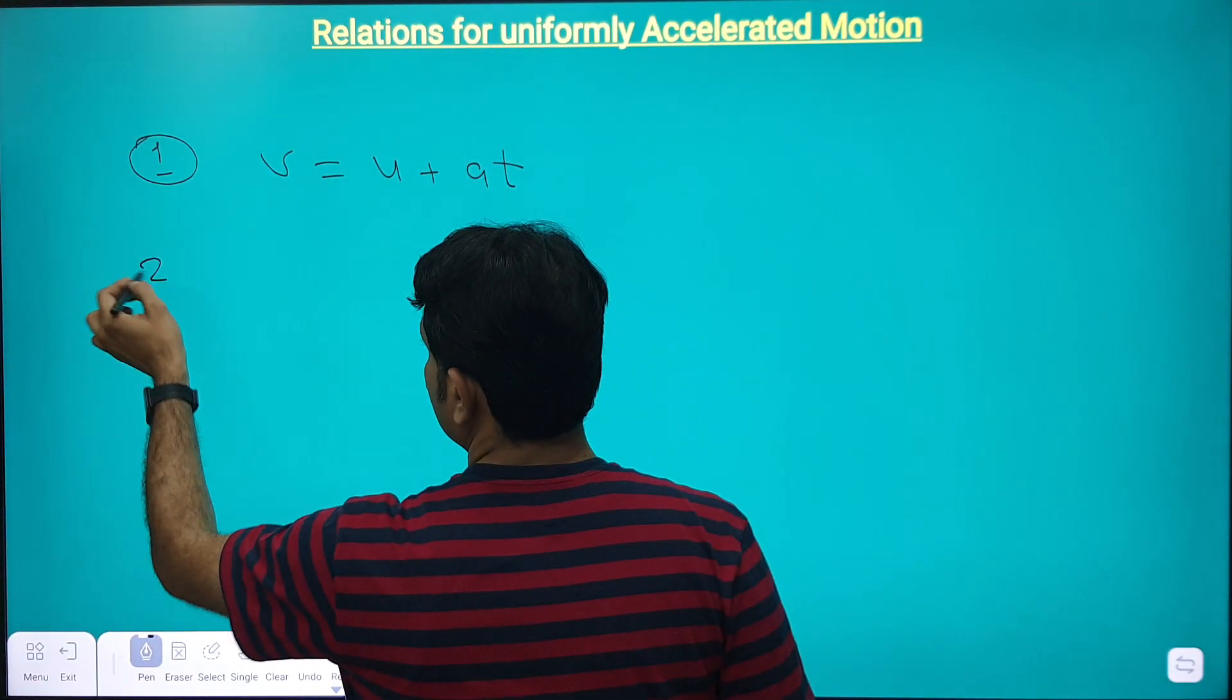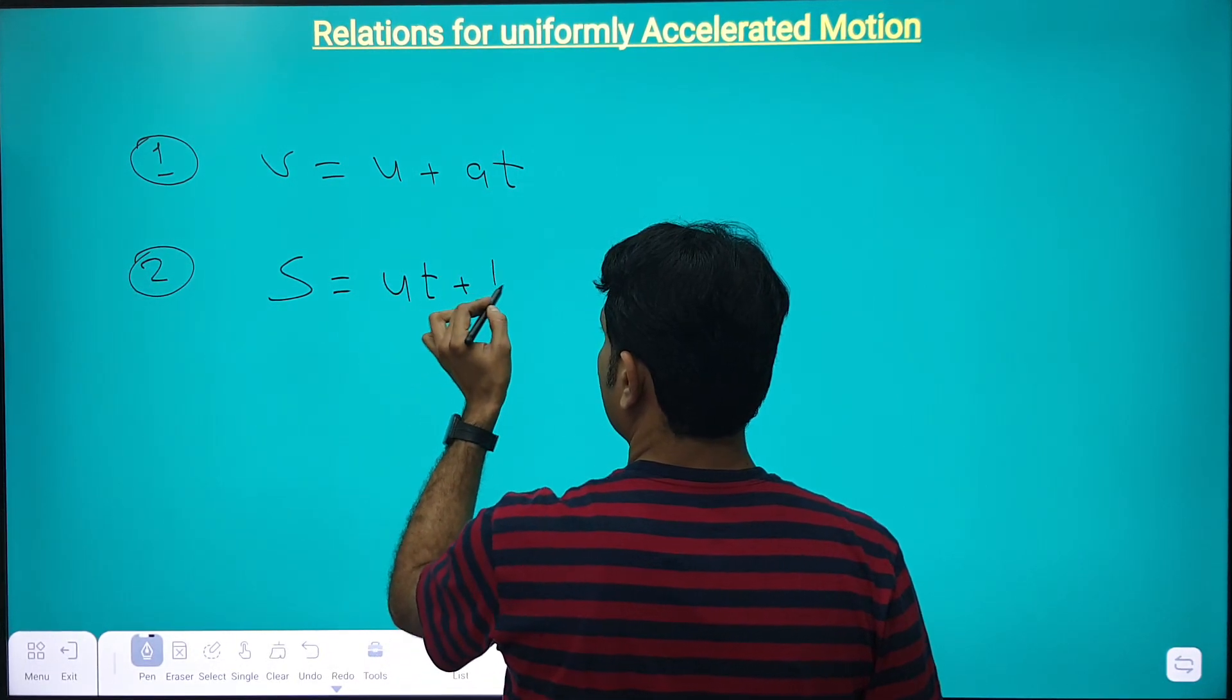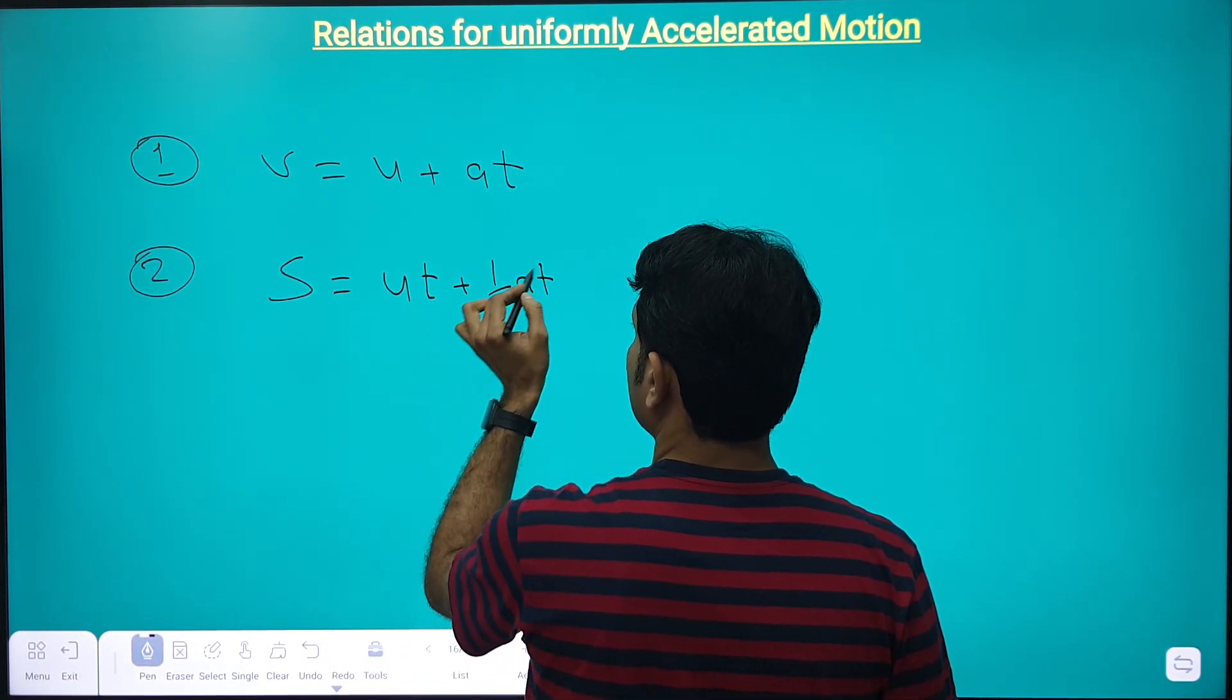The second relation is S is equal to U T plus half A T square.